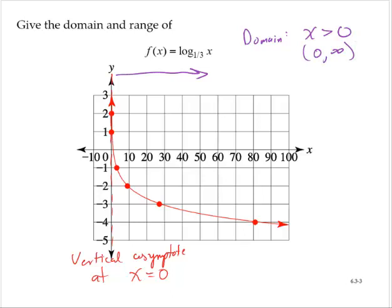For the range, it looks like we can go all the way to the top, all the way to the bottom. So therefore, the range is all real numbers, or interval notation, negative infinity, comma, infinity.